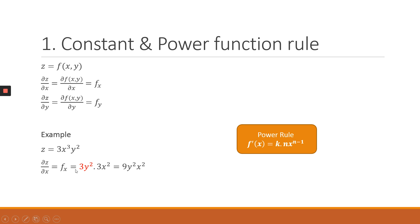When you differentiate using the power rule, 3 and y² will be your constant k. You multiply the constant by the power on x, which is 3 — bringing down the 3 — and x is now raised to the power of 3 minus 1, which is x². Simplifying, 3 times 3y² gives us 9y² multiplied by x², and that becomes your final answer.